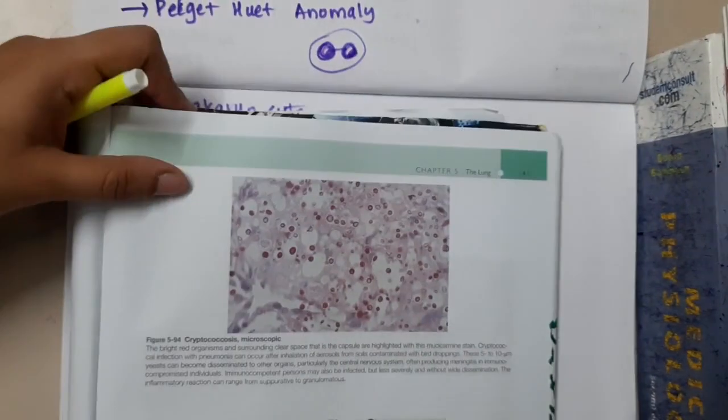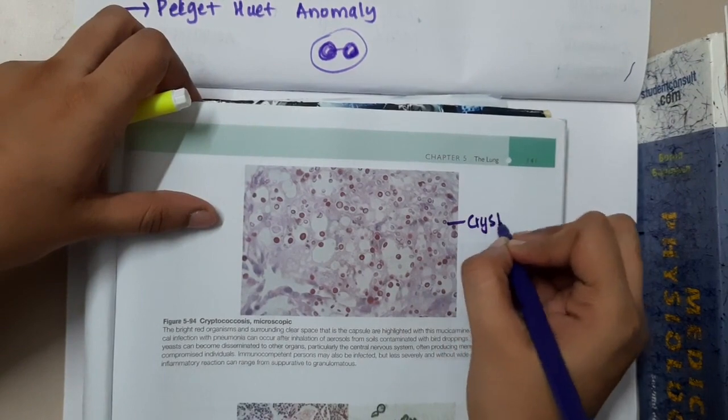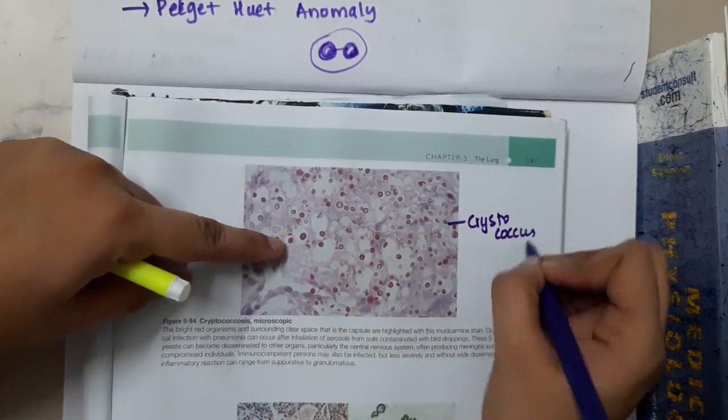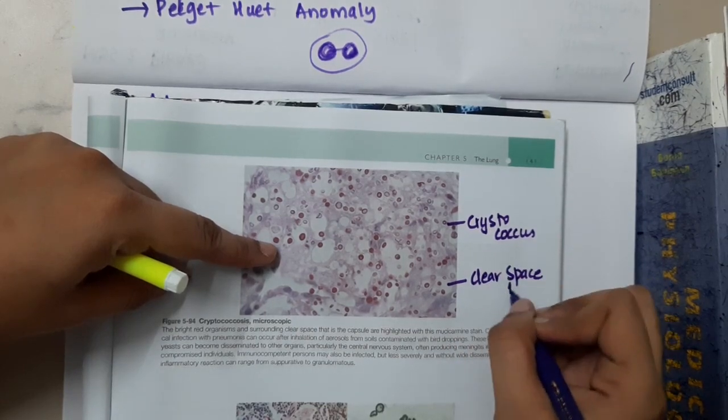This is one more preparation which is showing cryptococcus with capsule seen as clear space. This clear space which is seen is nothing but the capsule.